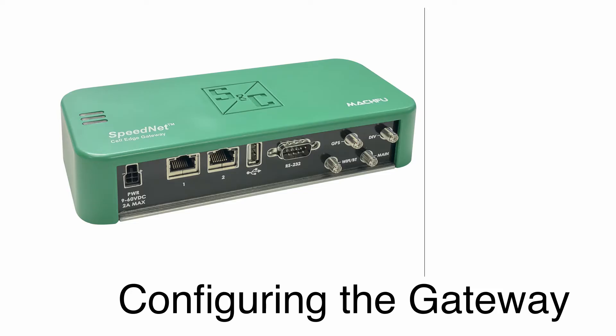After installation of hardware in the field, a check of gateway communication and private wireless network device communication, if applicable, is recommended. When the gateway is configured for the VPN network interface mode, it communicates over a virtual network. Carry out the following steps to configure the gateway for VPN mode.